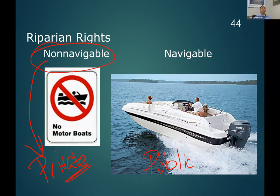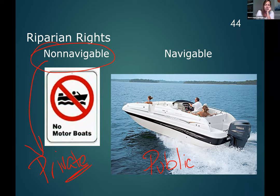If the water is non-navigable, who do you think owns it? The landowners do. The landowners not only own the land, but they also own the water itself. If the body of water is big enough to be navigable, then it belongs to the public. If it's too small to be navigated, then it belongs to the landowner.